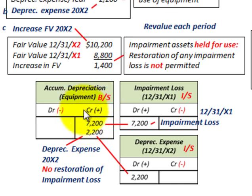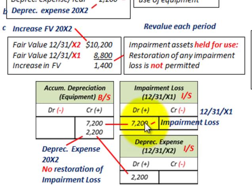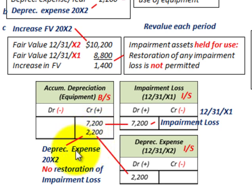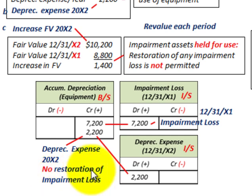For the journal entries to record this impairment, we credit accumulated depreciation for $7,200 and debit impairment loss on our income statement for $7,200. We also recognize depreciation expense for 20X2: increase accumulated depreciation by $2,200 and debit depreciation expense for $2,200. Remember, there is no restoration of the impairment loss when this asset is being held for use.